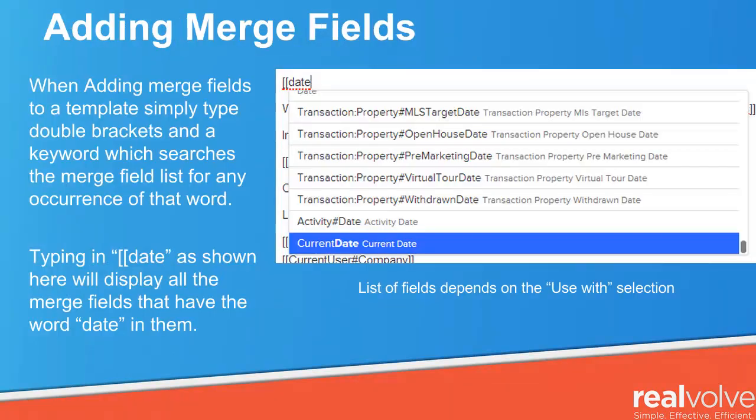When adding merge fields to a template, simply type in double brackets and a keyword, which searches the merge fields for any occurrence of that word. In this case, we're typing in bracket bracket date, and this will show any of the merge fields in the list that have the word date in them.